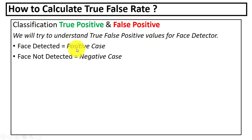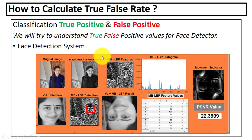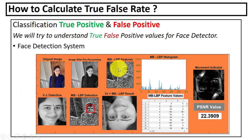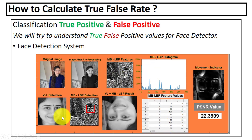Here we have two classes: first is face detected, this is the positive case; second is face not detected, that is the negative case. This is the face detector that we recently created. This is the input image and this is the image after pre-processing, and here we have the binary features extracted from the digital image, its histogram, and its feature values.